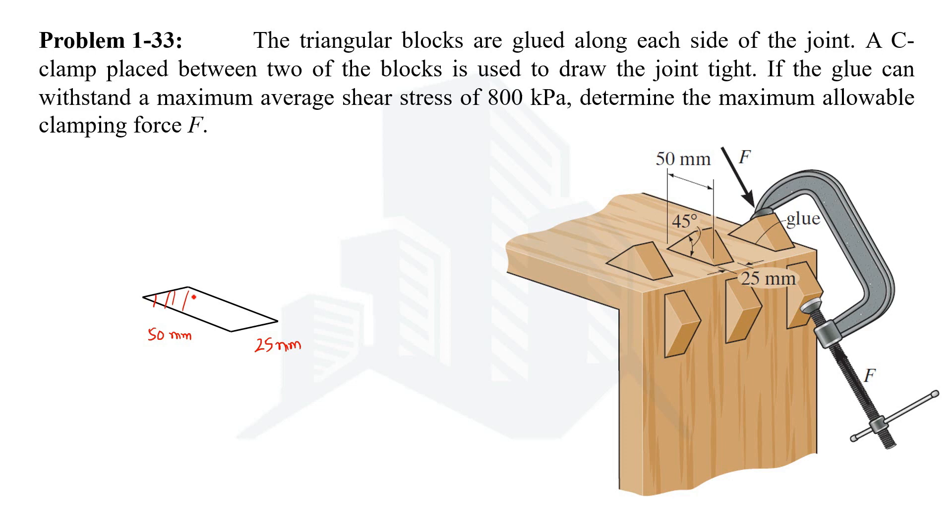Now we can have the area of this as 50 multiplied by 25, and if you want to convert it into meters then you need to divide by 1000, and ultimately we are going to have area as 1.25 into 10 raised to power minus 3 meters squared.